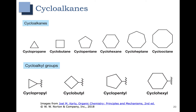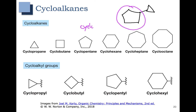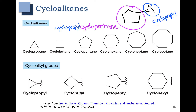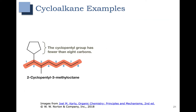Any cycloalkyl substituents we would of course use the suffix 'yl'. One example would be something like a cyclopentane with a cyclopropyl group attached. The parent chain would be the cyclopentane and the substituent is a cyclopropyl group. In this case we don't even have to add any numbers because there's really only one place to put that cyclopropyl group. Let's look at some more cycloalkane examples.